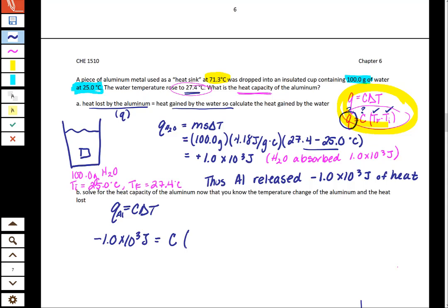And let's talk about why the T final is 27.4 degrees Celsius. So when we look at these kinds of problems, before the aluminum ends up in the water, it was a higher temperature. It was 71.3 degrees.